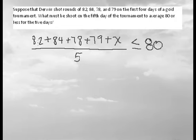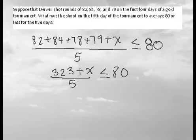Okay so let's combine like terms. 82 plus 84 plus 78 plus 79 is 323 plus x all over five, less than or equal to 80.